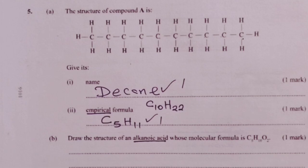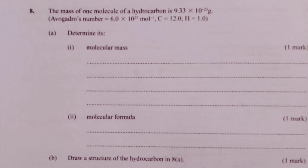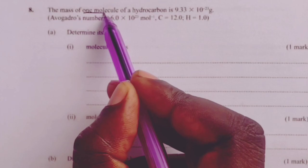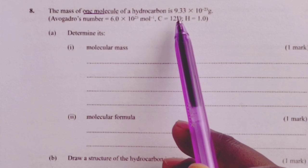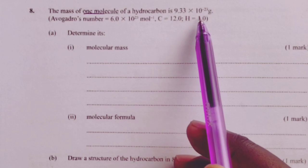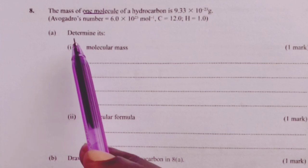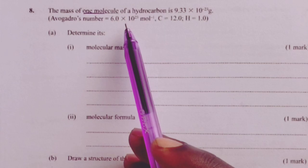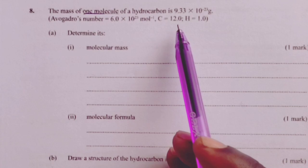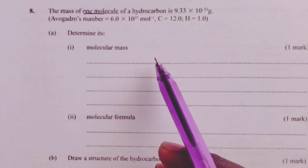We proceed to our next question borrowed from form 3 work and that is question number 8. Question 8 came from the topic, the mole. The mass of one molecule of a hydrocarbon is given as 9.33 times 10 to power negative 23 grams.